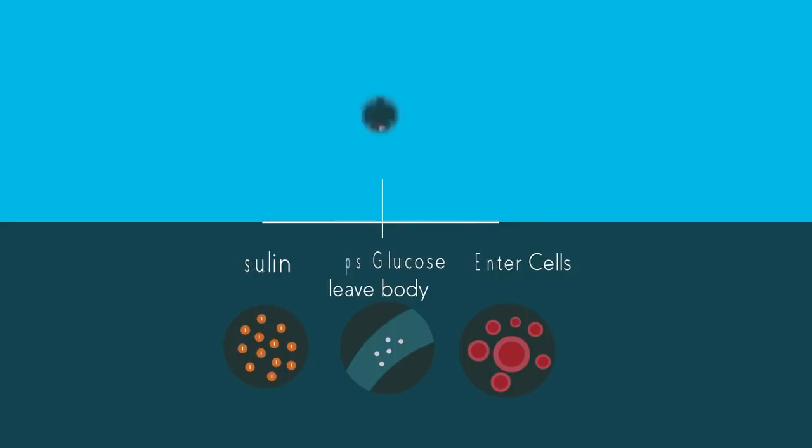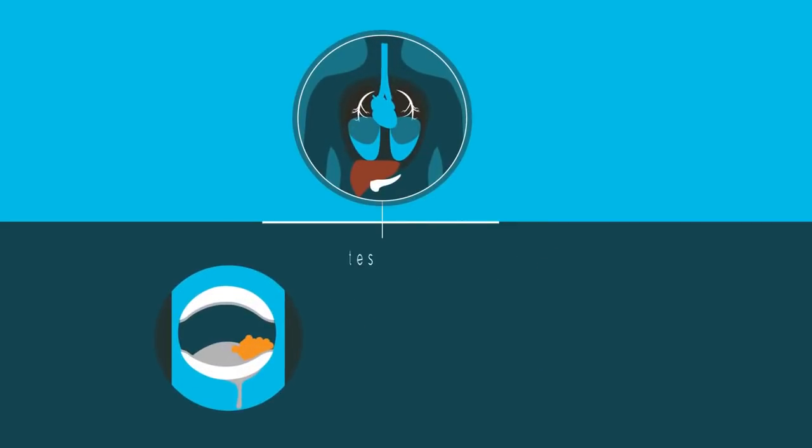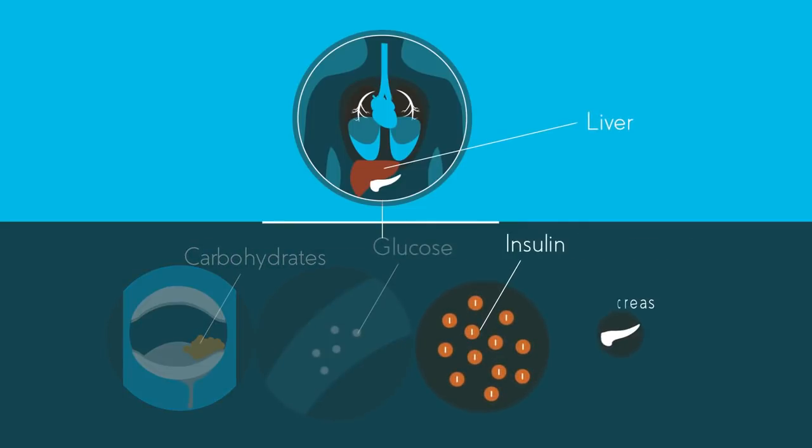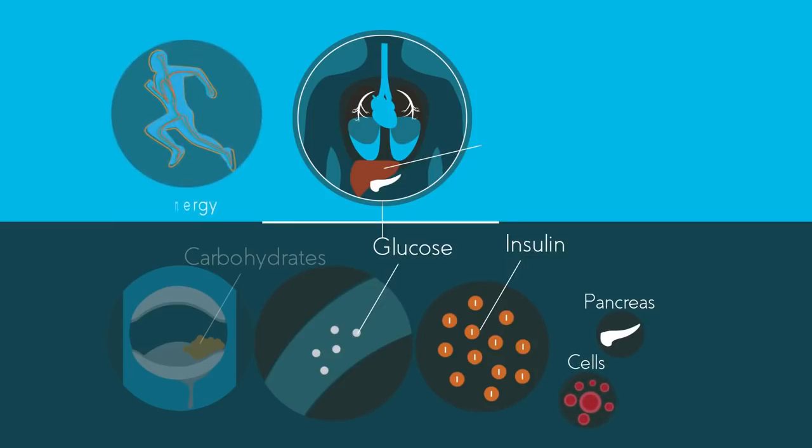Your body digests carbohydrates, breaking it down into glucose. Your liver also produces glucose. Insulin is a hormone produced by the pancreas that allows glucose to enter into our body's cells. Here it is used to provide energy to undergo our normal life processes, like growth and repair.